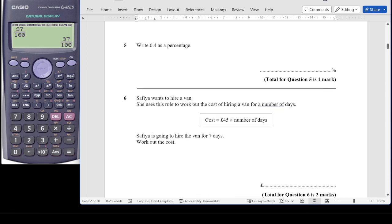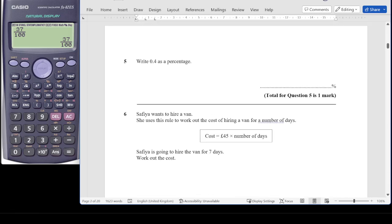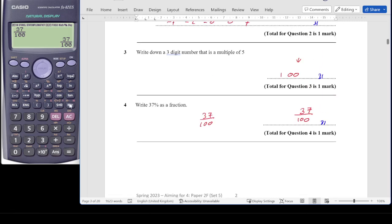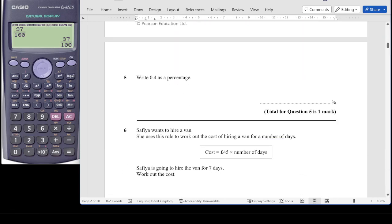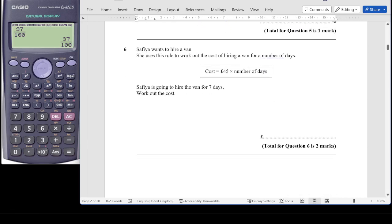Question 5, write 0.4 as a percentage. So percentage as a fraction, now we're doing a decimal as a percentage. We could in theory times by 100. I would tend to view it as 4 out of 10, which is equal to 40 out of 100, so 40%.